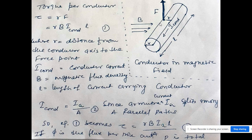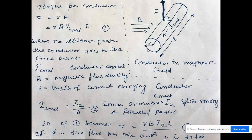Here L is the length of the current-carrying conductor and I is the conductor current. In the armature there are A number of parallel paths, so the conductor current equals the armature current divided by A, where A is the number of parallel paths. We substitute this value into equation one to proceed.